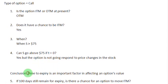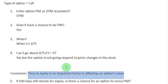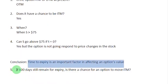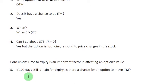The conclusion we can derive is that time to expiry is an important factor in affecting the value of an options contract. For example, if 100 days still remain for expiry, is there a chance for an option to move in the money? We will say yes, because there is simply a lot of time remaining for the option to expire. Who knows what is going to happen to the stock price? It might go to $75, $72, $73, $80, $85, $77 — anywhere above the exercise price — and that would bring the call option in the money. So if time is still there for the option to be alive, there is always a chance that the option can move in the money, even if it is currently out of the money.